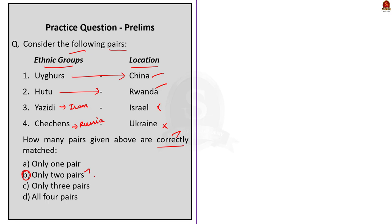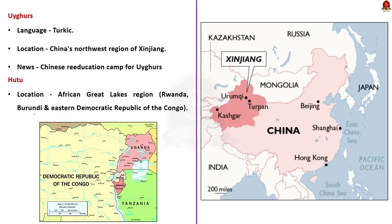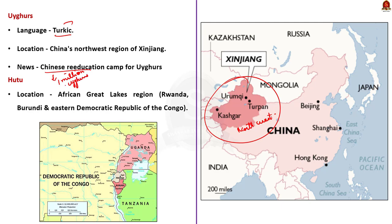As part of this question's discussion, let us see a few important points about these ethnic groups. Uighurs are a Turkic-speaking ethnic group originating from the regions of Central and East Asia, recognized as native to China's northwest region of Xinjiang. Recently, Uighurs were in news because China has detained more than 1 million Uighurs in so-called re-education camps. Chinese officials are concerned that Uighurs hold extremist and separatist ideas, viewing the camps as a way of eliminating threats to China's territorial integrity.